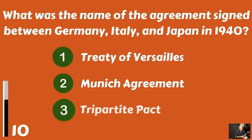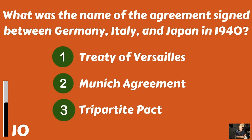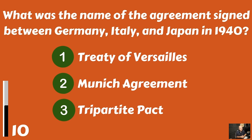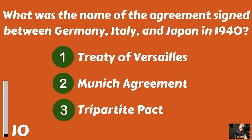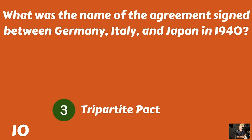What was the name of the agreement signed between Germany, Italy, and Japan in 1940? Was it the Treaty of Versailles? The Munich Agreement? Or the Tripartite Pact? It was the Tripartite Pact.